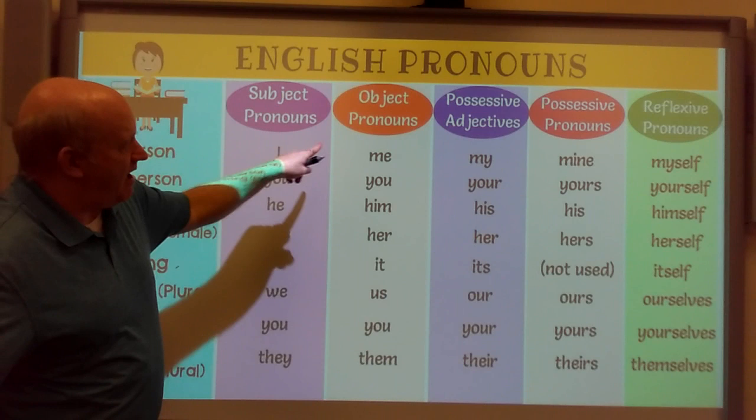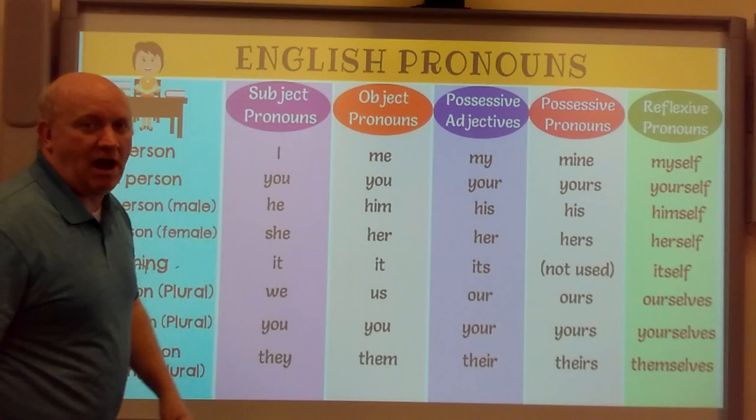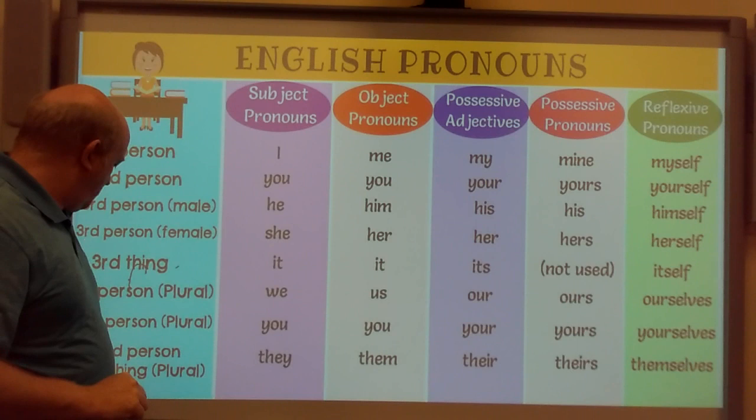There are five columns. We're going to be looking at each column. We've got subject pronouns, object pronouns, possessive adjectives, possessive pronouns, and reflexive pronouns. And we're going to be looking at each of the five in more detail.